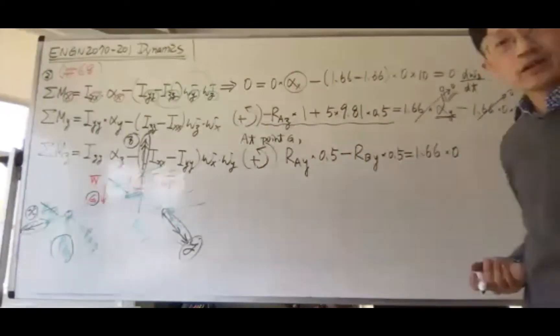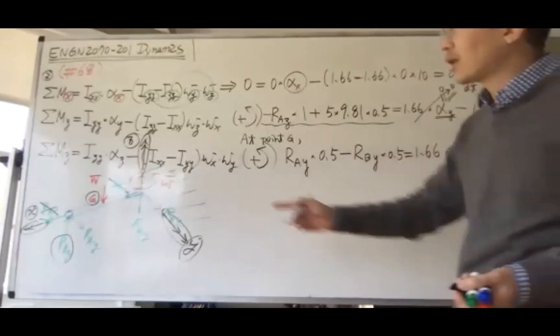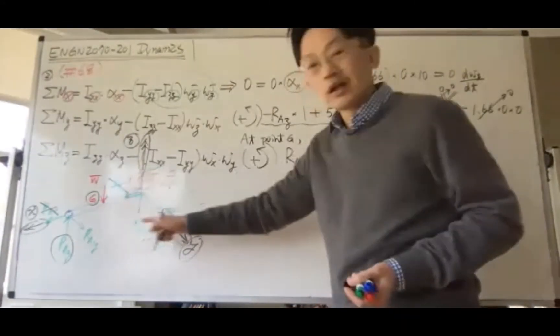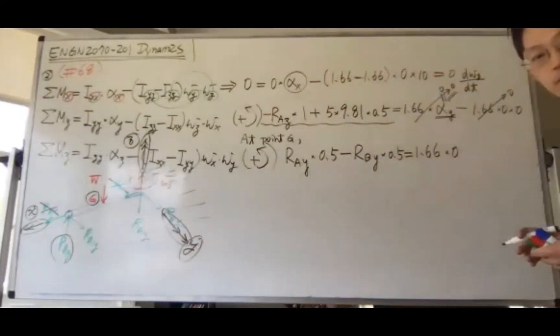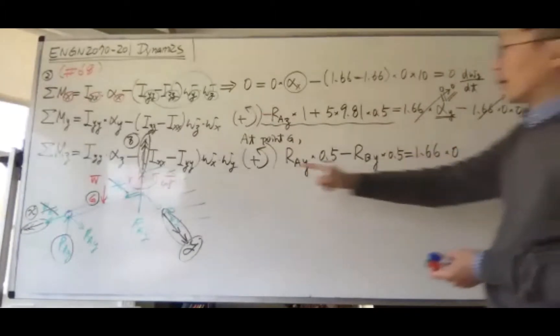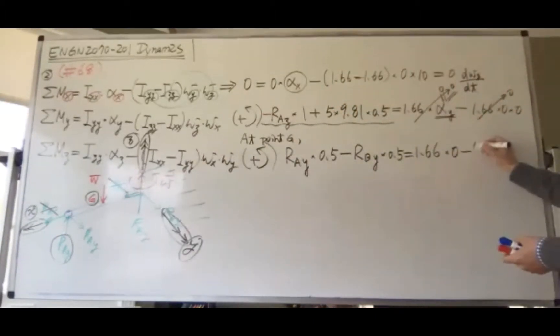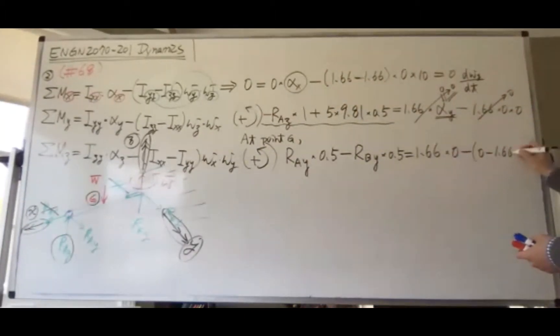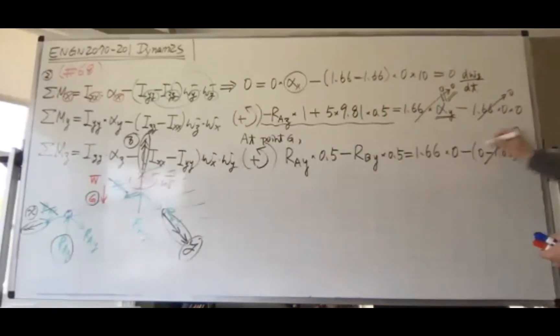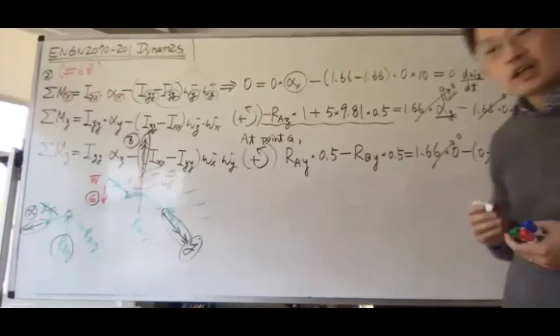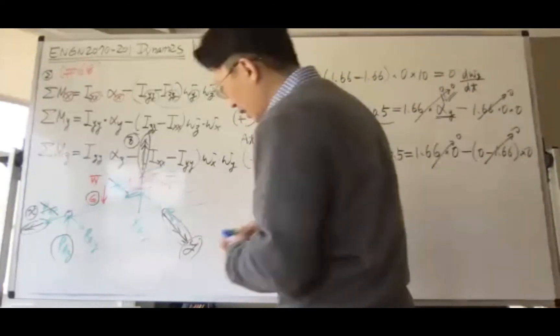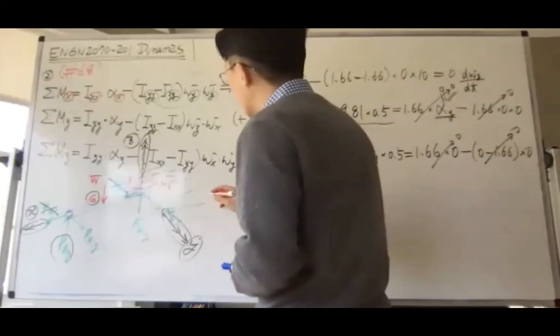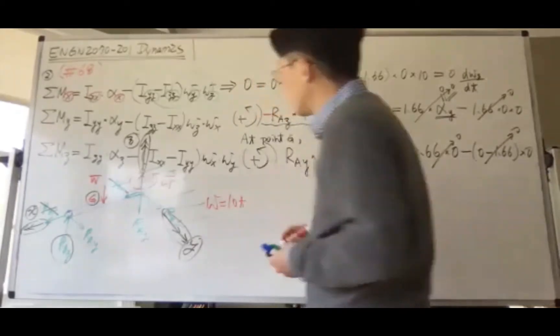There's no angular acceleration in this problem—only one angular velocity, which is constant. Therefore, there's no angular acceleration in the three different directions. These two terms also become zero. Be careful—this won't always be the case.